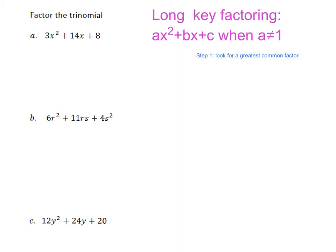Step 2 is just like short key method, we are going to multiply a by c to get our key number. So 3 times 8, our key number is going to be a positive 24. And now we are going to look for factors of 24 that add to 14. I am only going to do the positive list of factors because we are looking for a positive number.